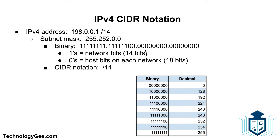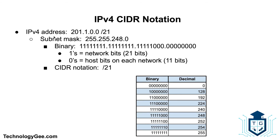Instead of dealing with tens of thousands or potentially millions of IP addresses that the average network can't handle, by borrowing bits from the host we create this slash 14 network. We turn the first 14 bits on and the remaining bits off, which gives us the subnet mask 255.252.0.0.